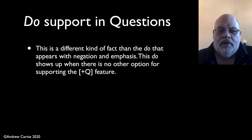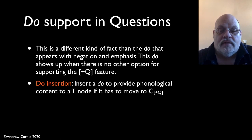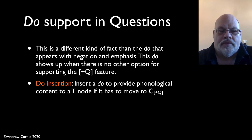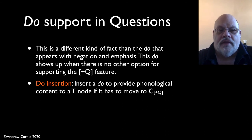The solution is do-support. Do-support effectively puts something into the T node — a dummy verb — so that it can undergo subject-aux inversion and indicate the question. The rule of do insertion says: insert 'do' to provide phonological content to a T node if it has to move to C plus Q. This is a bit like our expletive insertion rule, except on verbal structures. Recall that expletive insertion inserted an expletive into the structure when the EPP was going to be violated. This rule inserts 'do' to ensure we have something in the T node so it can undergo T to C movement in questions.